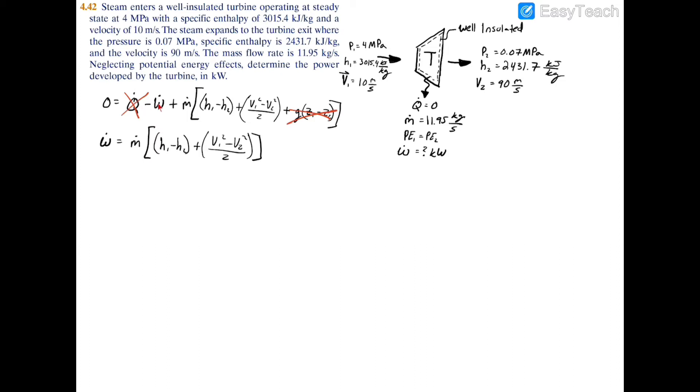Now if you just add W to both sides, you'll have that the power equals the mass flow rate times the change in enthalpy plus the change in velocity divided by two, aka the kinetic energy.